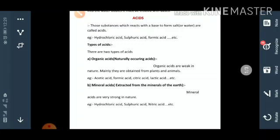They are obtained from plants and animals. Some examples of organic acids are acetic acid, formic acid, citric acid, lactic acid, etc. The second that we have - mineral acids - extracted from the minerals of the earth and they are very strong in nature. Examples are hydrochloric acid, sulfuric acid, nitric acid, etc.